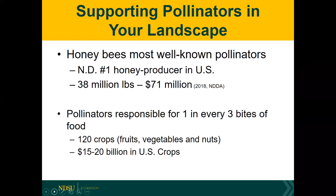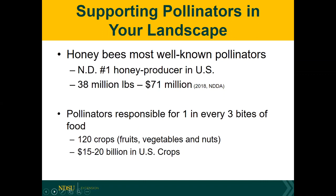One specific crop that absolutely needs pollinators to achieve pollination is almonds. Some of our other crops like berries may or may not need a pollinator. Some require two different cultivars, which requires a pollinator to transfer pollen from one to the other. Berry species like raspberries benefit greatly — the more female parts that are pollinated, the better the quality and the less mushy the raspberry will be.